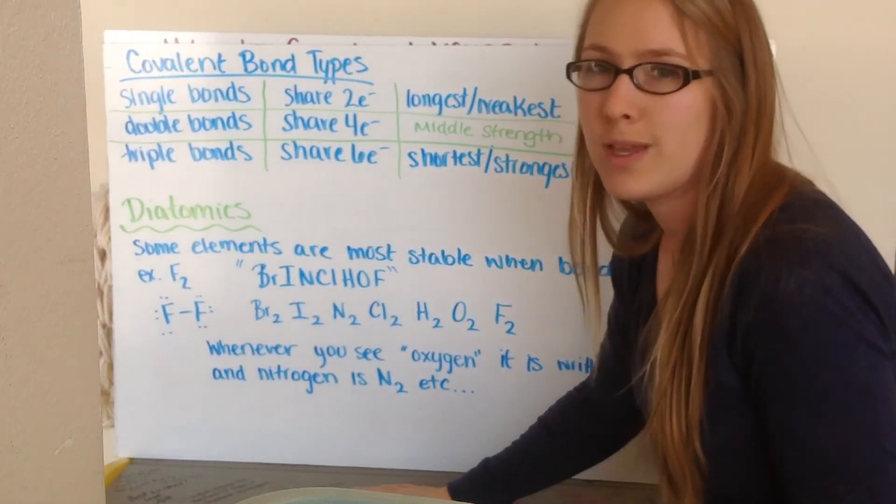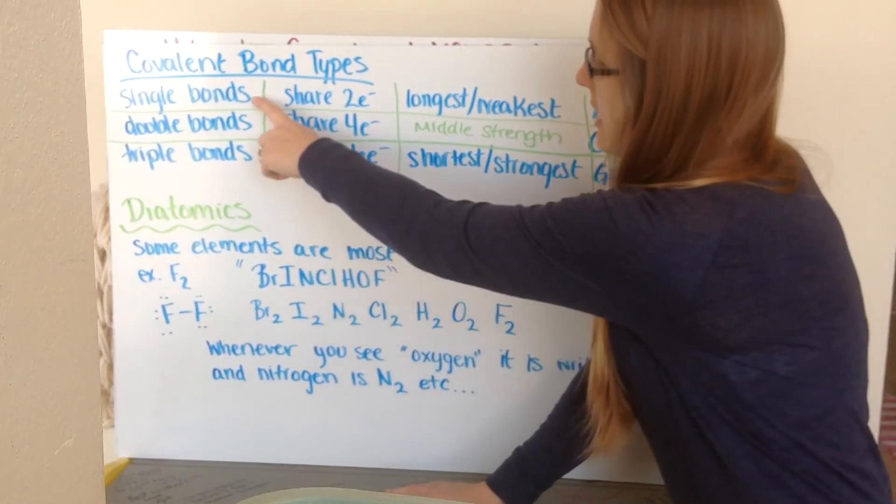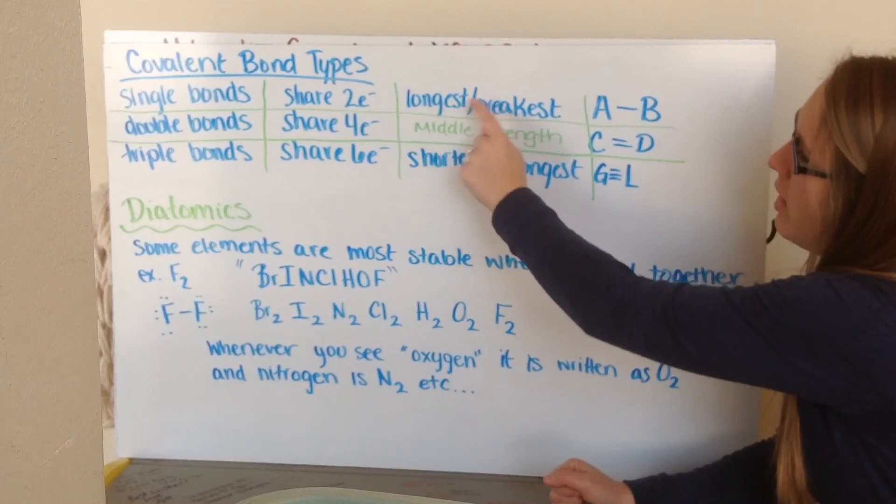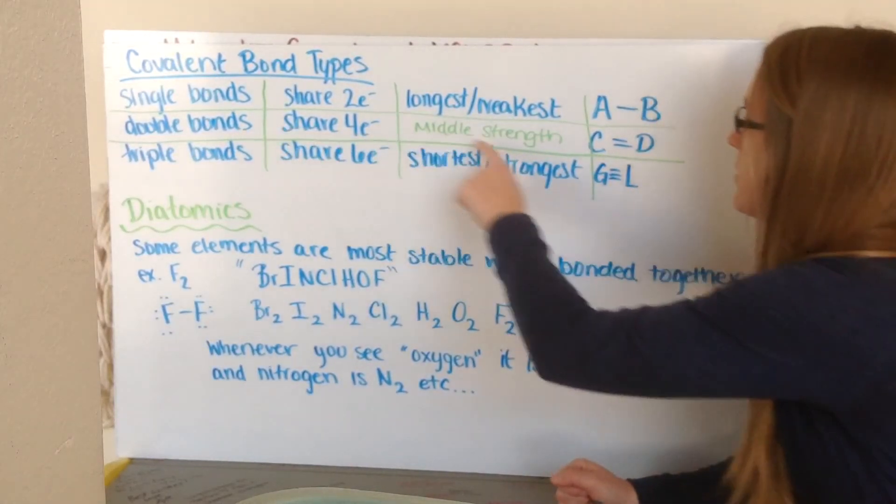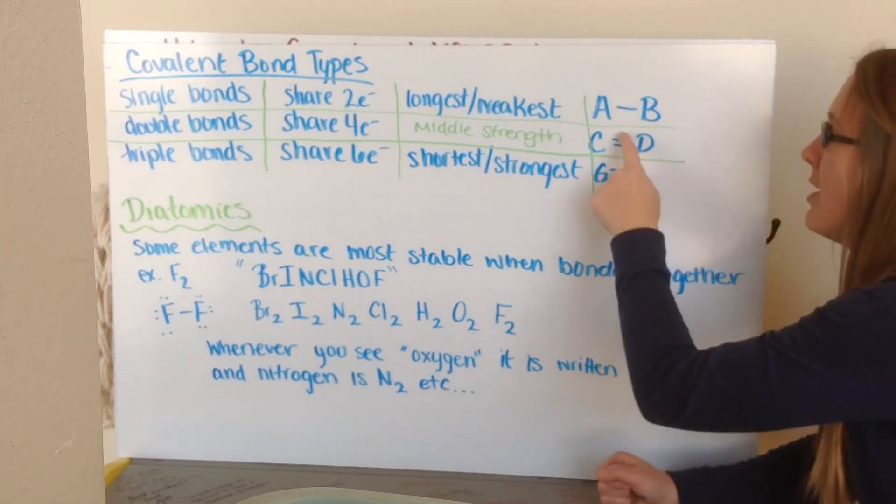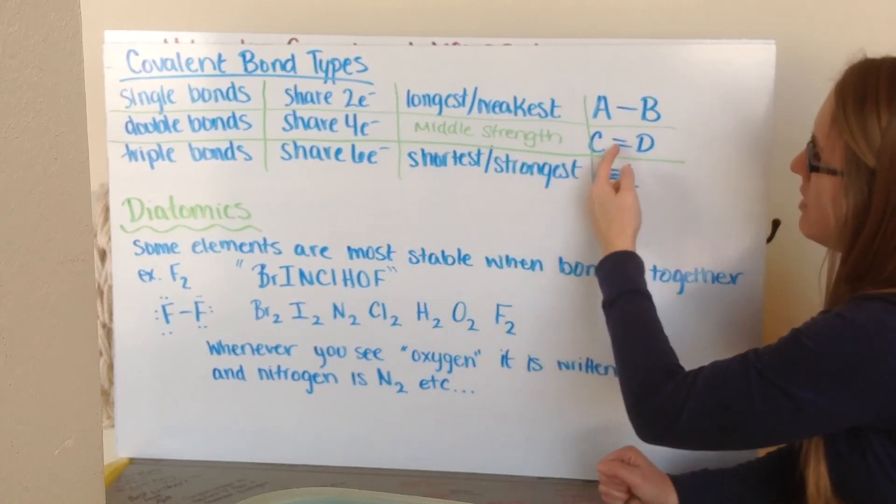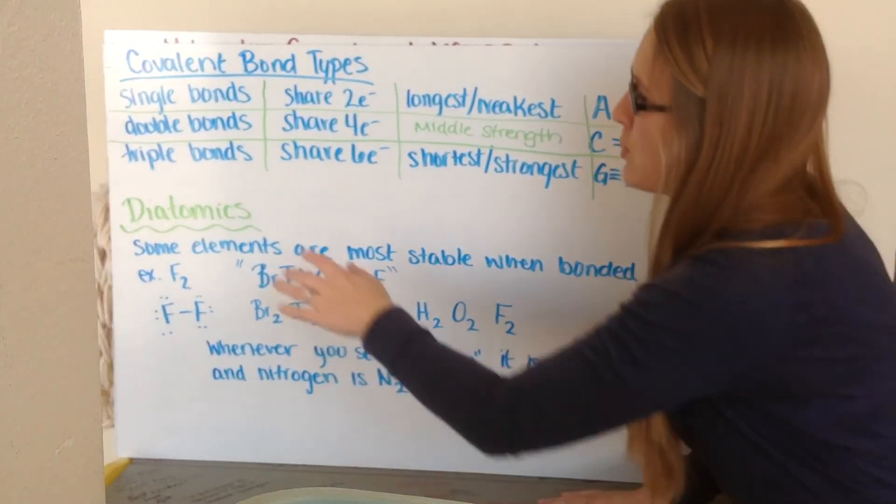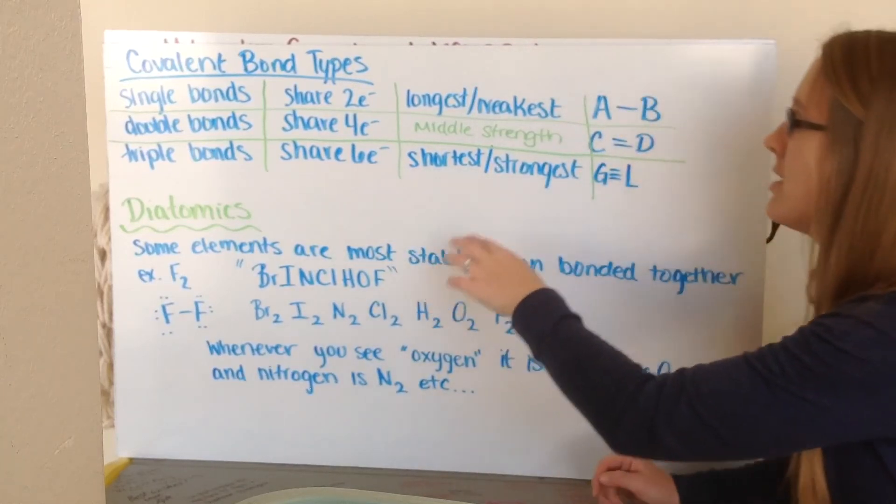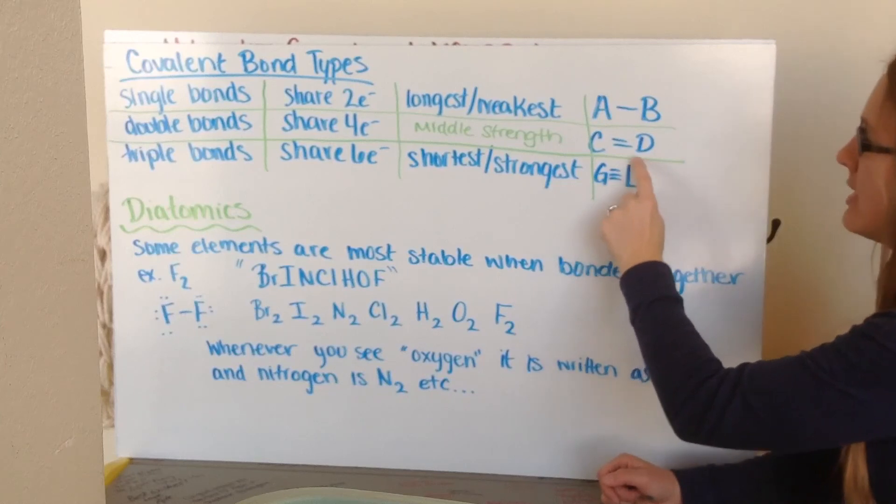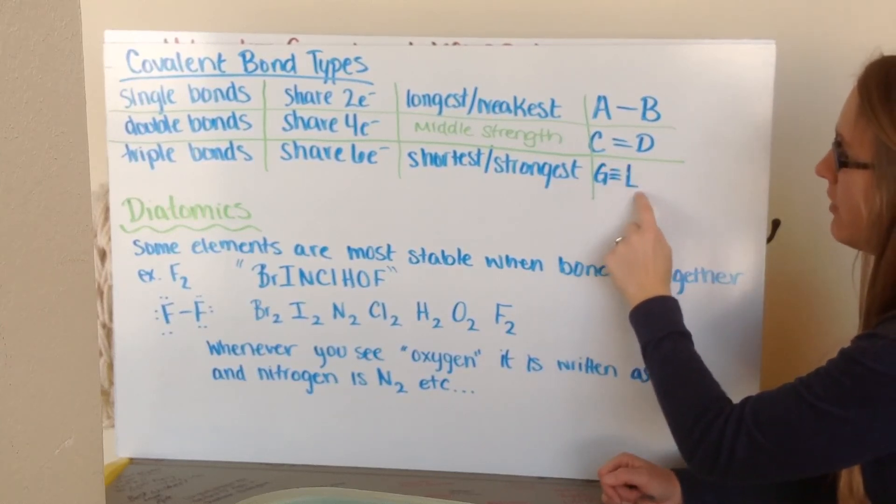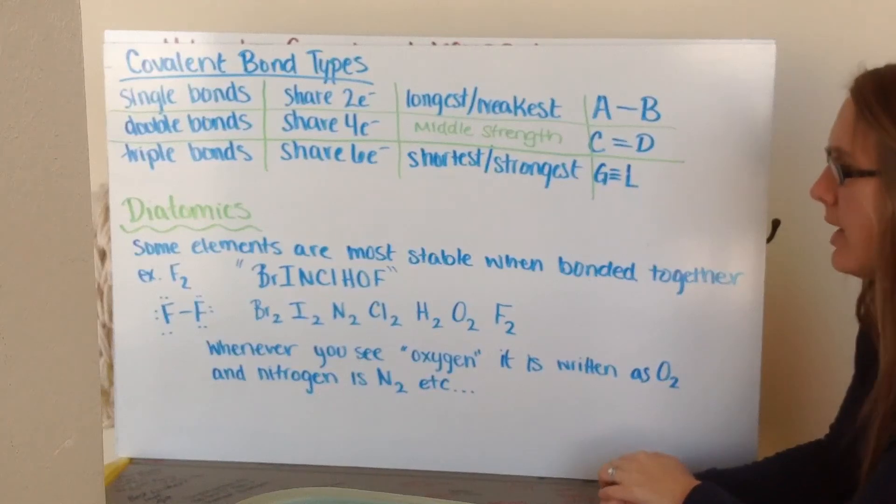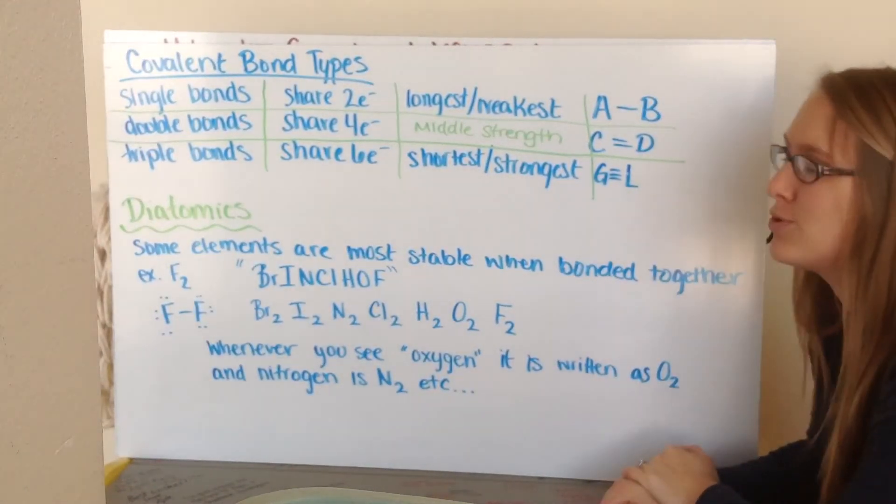So just to talk about those covalent bonds that you have that we can run into. A couple of different types. You have the single bond, which is where I just have our A to B with one line in between. Here they're sharing 2 electrons. This is going to be your longest and weakest bond. The next thing we have is our double bonds, which is where I've taken a pair and taken a pair and made them share. So we have a double bond here. They share 4 electrons. This is kind of middle strength. Not the weakest, not the strongest. Then we have our third type where we have our triple bond. They're going to share 6 electrons. It's going to be the shortest and strongest. So there are 3 different types we can have. You can't have a quadruple bond. They don't exist.